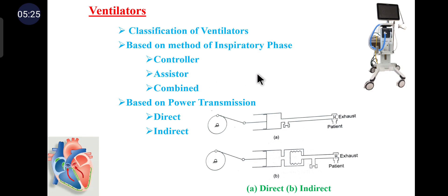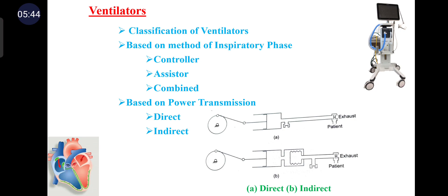In the assistor mode, the ventilator augments the patient's inspiration by operating in response to the patient's inspiratory effort. A pressure sensor detects the slight negative pressure that occurs each time the patient attempts to inhale and triggers the process of inflating the lungs, helping the patient to inspire whenever needed. The combined mode combines both the controller and assistor functions.